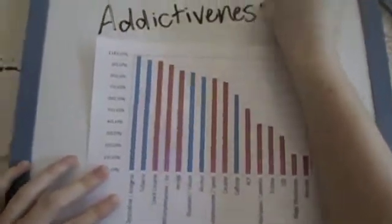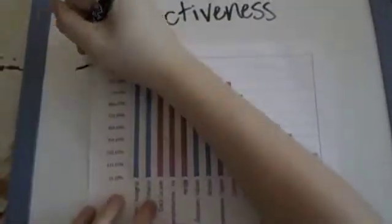Here's a graph showing the addictive levels of drugs. The red bars represent illegal drugs and the blue bars represent legal drugs. As you can see oxycodone is almost at 100% addictiveness.